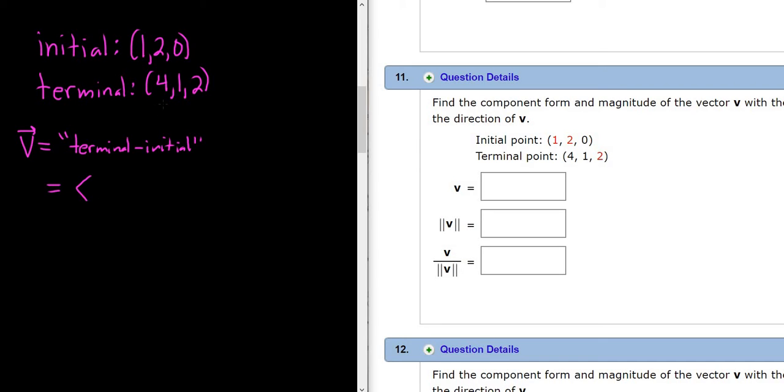So let's see angle bracket. So terminal is this one here. So 4 minus 1. Then you do 1 minus 2. So terminal minus initial. Just subtract the corresponding entries. And then you would do 2 minus 0. So you take your terminal point and you subtract your initial point.